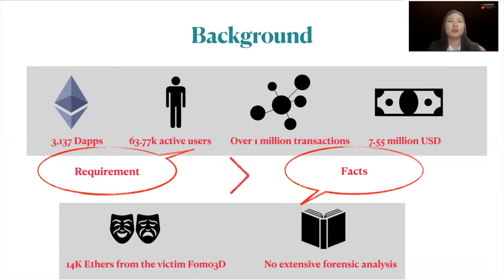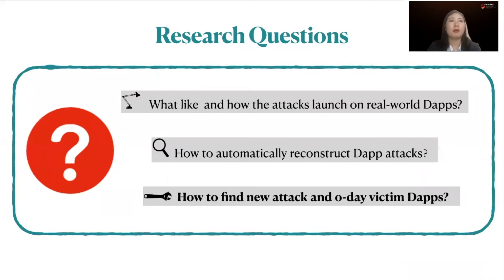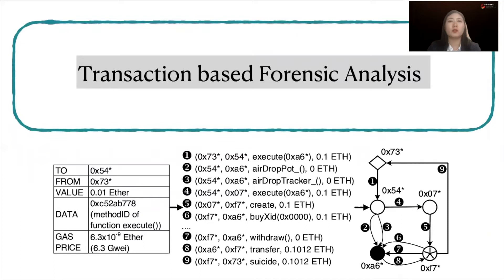We set out to find out what attacks on real-world DApps look like, how to automatically reconstruct DApp attacks, and how to find new attacks and zero-day victim DApps. We found that when DApps are exploited, evidence such as attack traces is kept in related transactions, which can later be used to analyze the attack.